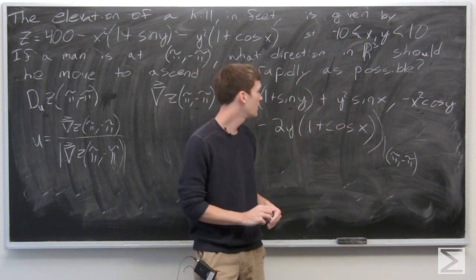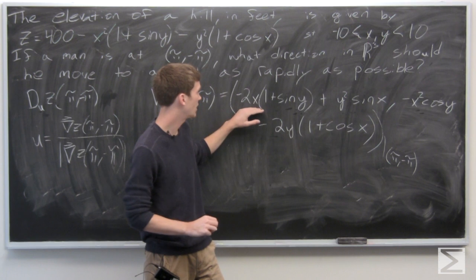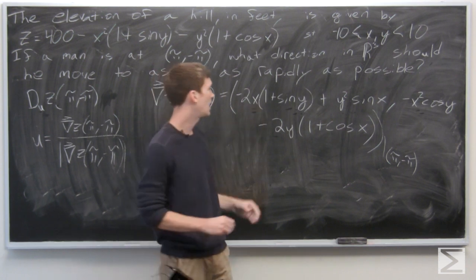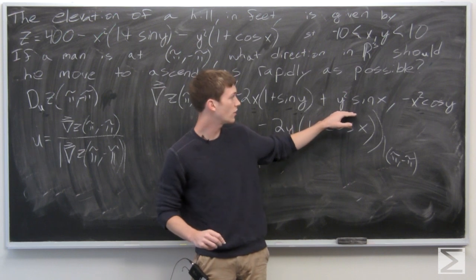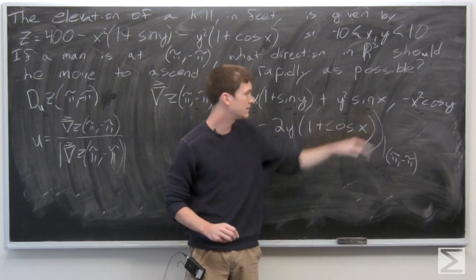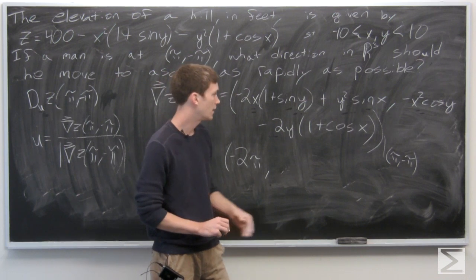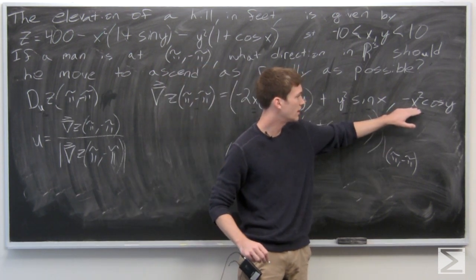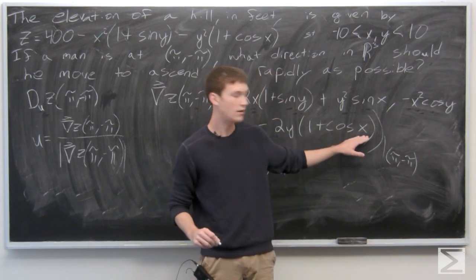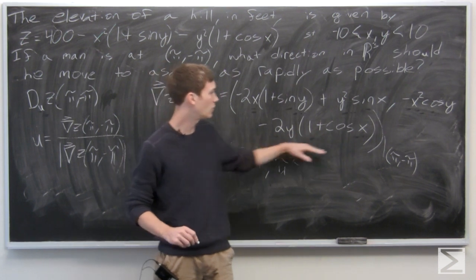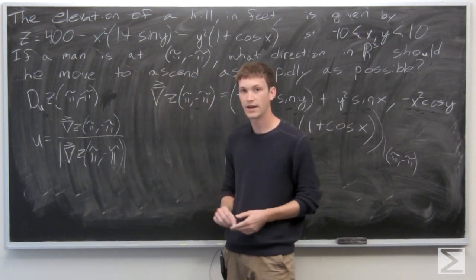Plugging in: sine of negative π is 0, giving us negative 2π. Negative π squared is π squared, and sine of π is 0, so that term vanishes. For ∂z/∂y: cosine of negative π is negative 1, so negative π squared times negative 1 is π squared. Cosine of π is negative 1, plus 1 is 0, so that whole quantity is 0. The gradient vector of z at (π, -π) is (-2π, π²).